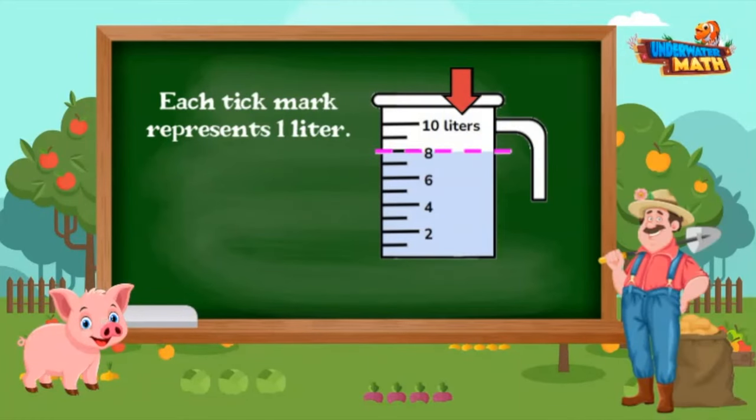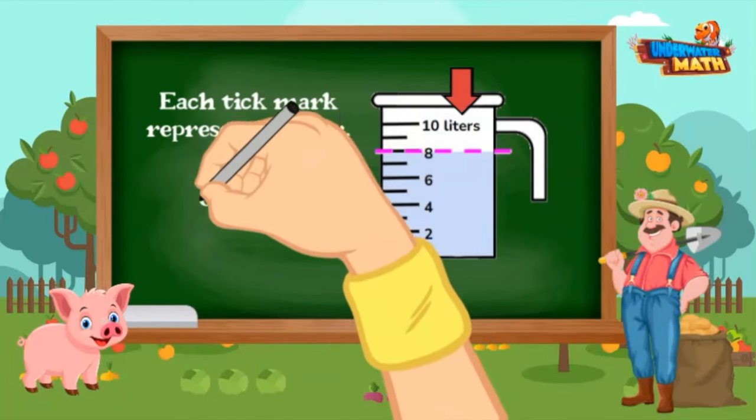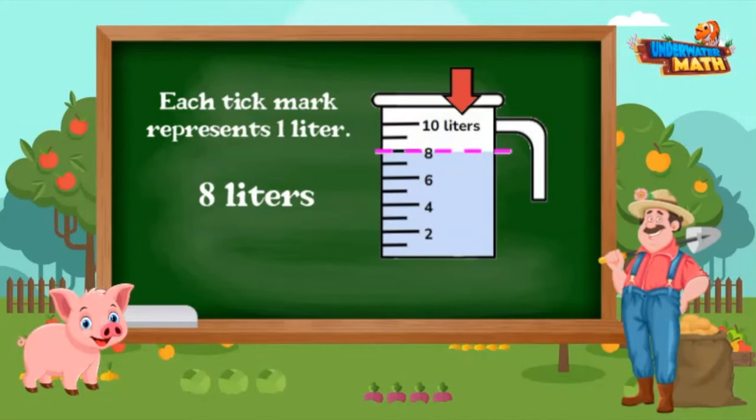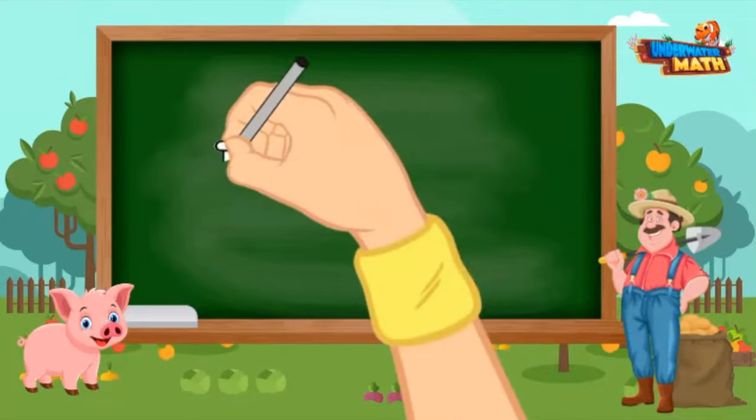If we were to draw a line to help us, we would see that it lines up with the number eight. We need eight liters of water to make one jug of cider.